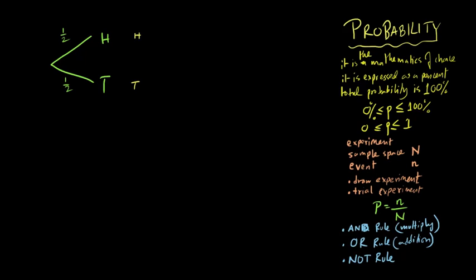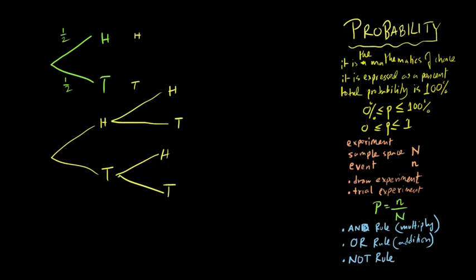Now if you're tossing the coin twice, the first toss can be head or tail. If the first is a head, the second toss can again be head or tail. If the first is a tail, the second toss can also be head or tail. Since this is a trial experiment, the probability remains constant — each toss has a half probability for head and half for tail.